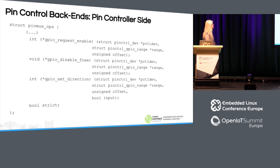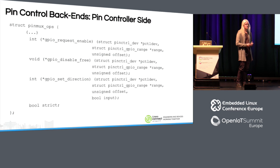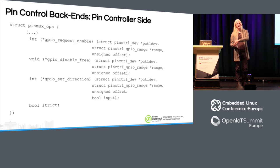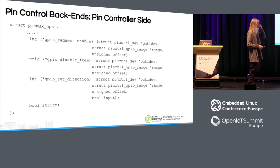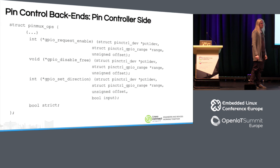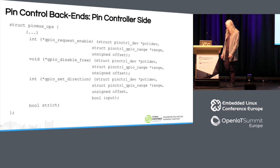In the back end of the pin controller, it looks like this — you have to implement this if you're calling back to the pin controller. Your pin controller must implement: request enable, which will mux that very pin to GPIO function; free, which will free it up; and callbacks for setting direction. They fit together like this. Also there is a flag that people evidently don't know much about — if you set strict to true in your pin controller, it means the pin cannot be used at the same time for GPIO and something else.